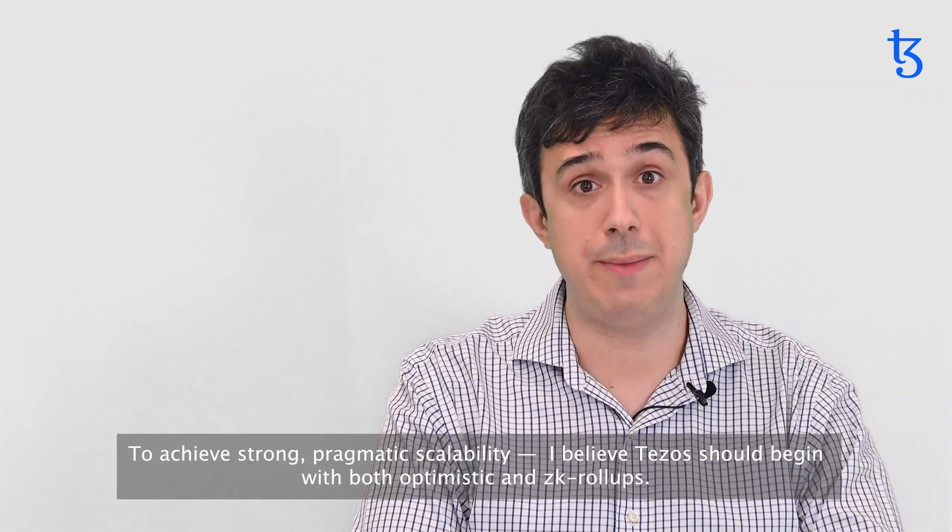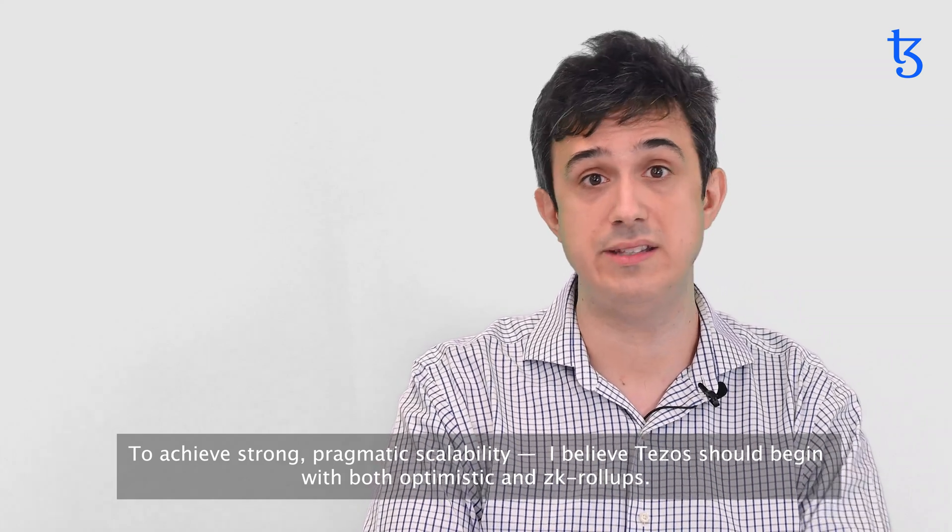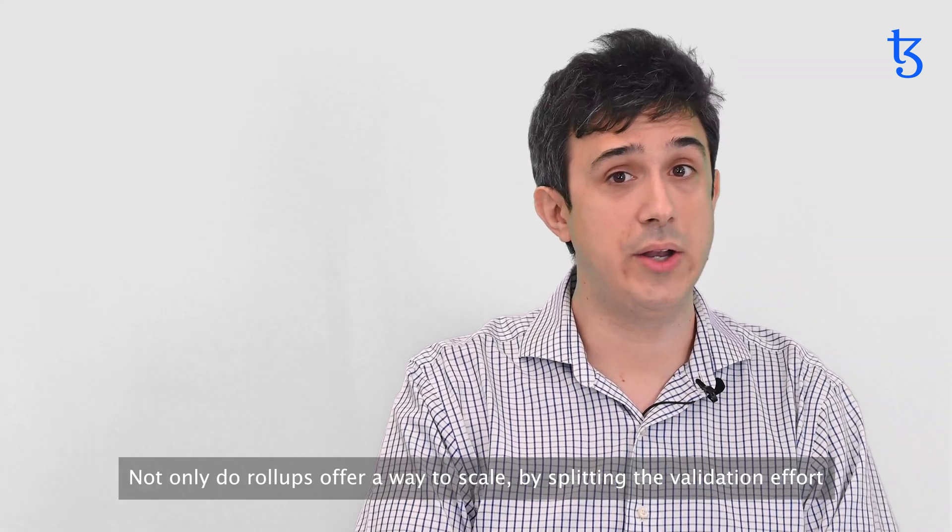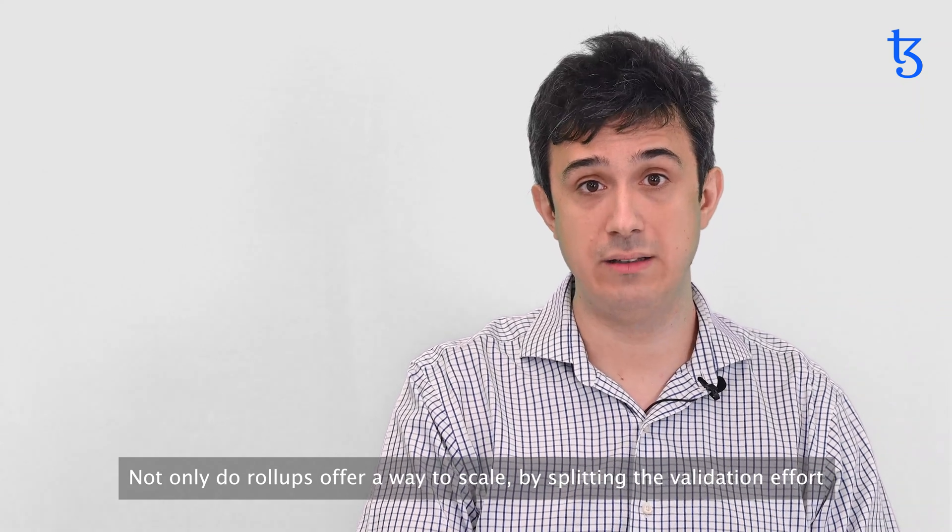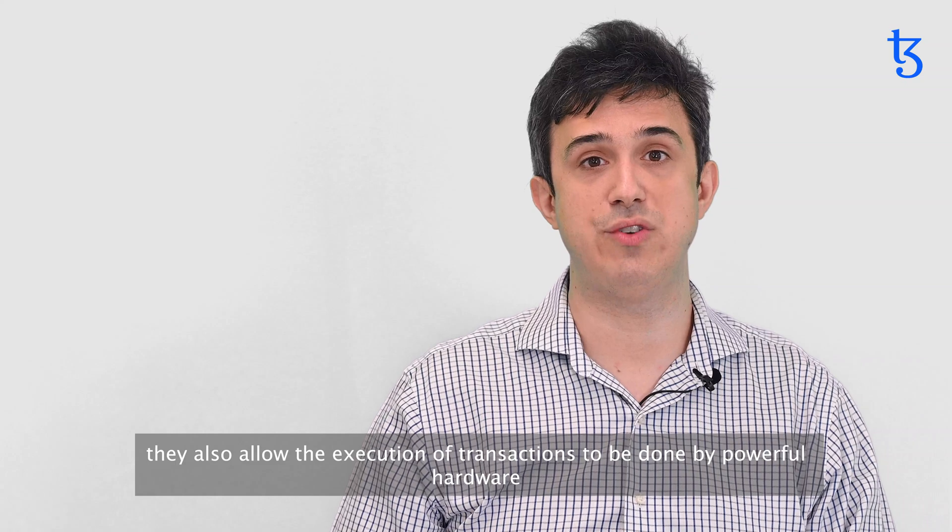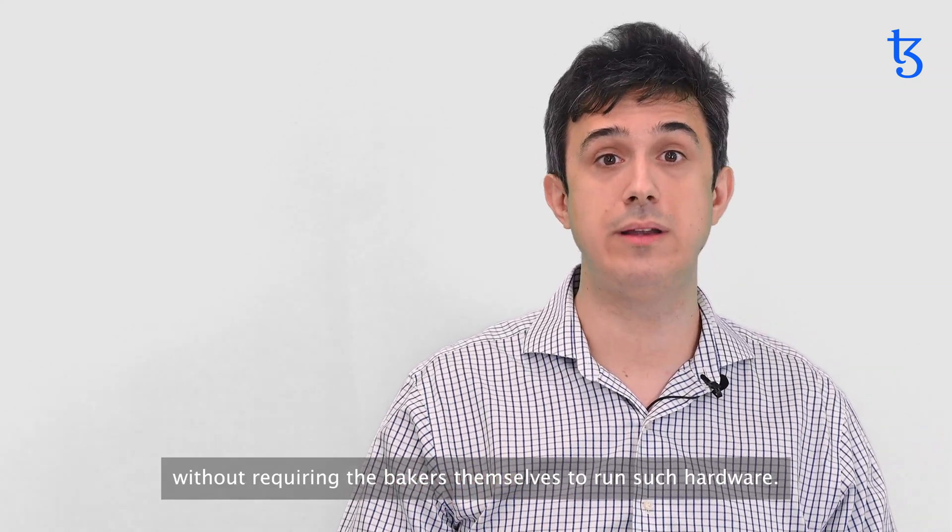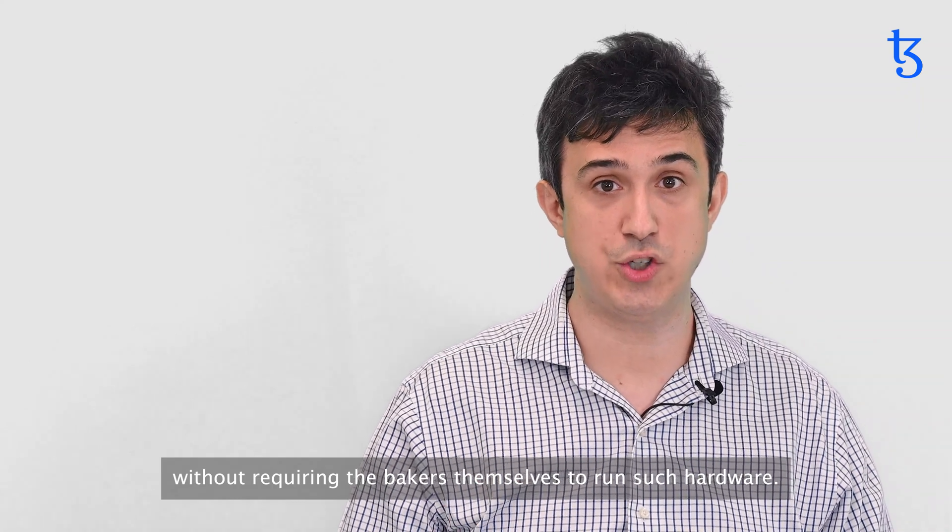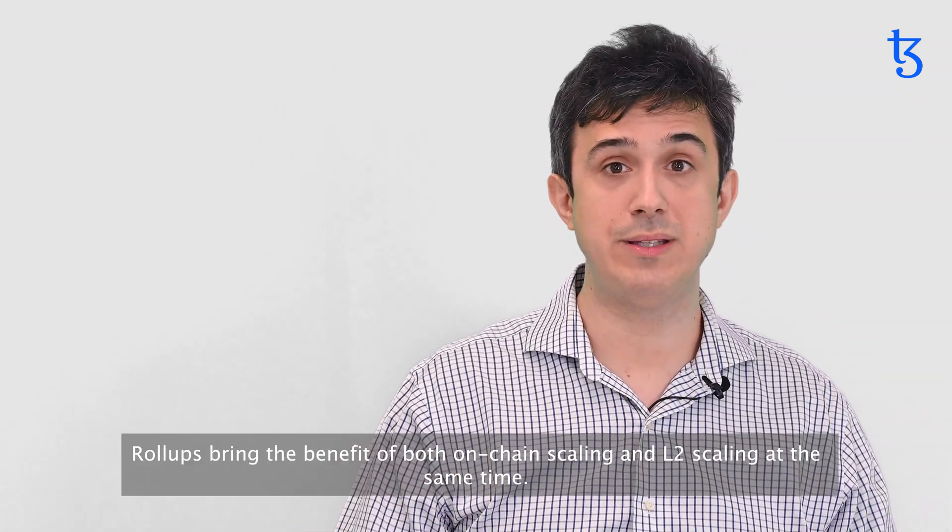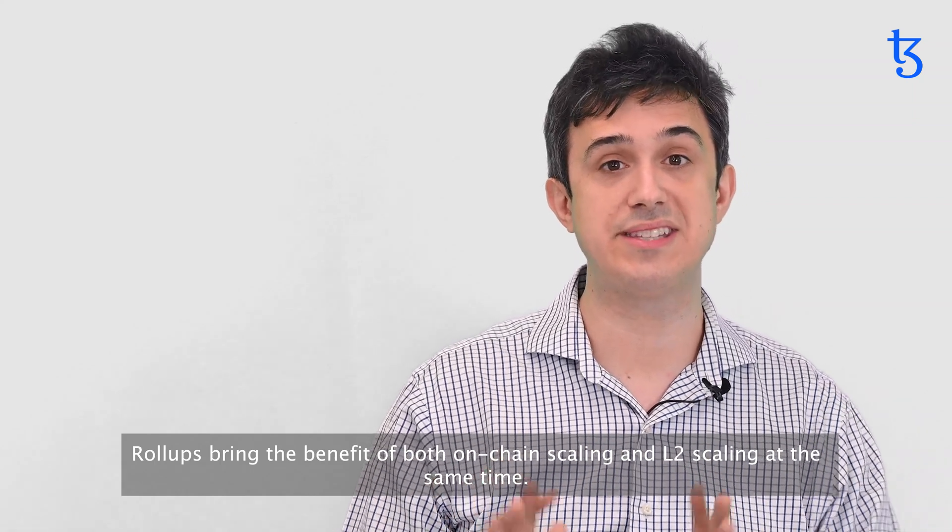To achieve strong, pragmatic scalability, I believe Tezos should begin with both optimistic and ZK rollups. Not only do rollups offer a way to scale by splitting the validation efforts, they also allow the execution of transactions to be done by powerful hardware without requiring the bakers themselves to run such hardware. Rollups bring the benefits of both on-chain scaling and L2 scaling at the same time.